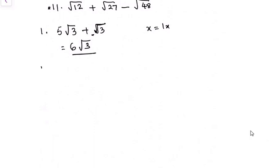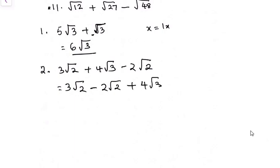The second one, we have 3√2 + 4√3 - 2√2. Carefully, you look at the question first. How many roots look alike? So the first thing we want to do, we want to arrange them so that we can minimize confusion. So we're going to say 3√2 - 2√2 + 4√3.